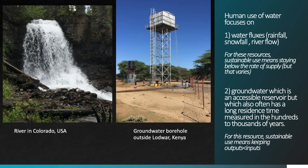There's another key point we'll explore more in a different video: groundwater. This is one reservoir — rather than a flux — that we rely on extensively as humans. The issue with groundwater is that it has a very long residence time, meaning it takes a long time for water to refill groundwater reservoirs. To use groundwater sustainably, we'd have to keep our outputs at a rate lower than the natural recharge of groundwater. Unfortunately, in many parts of the world we're using groundwater much faster than it's naturally produced, and we're actually depleting this source of water.